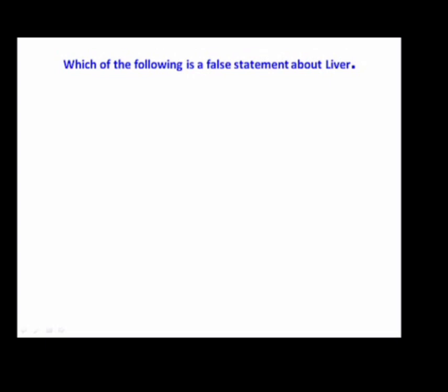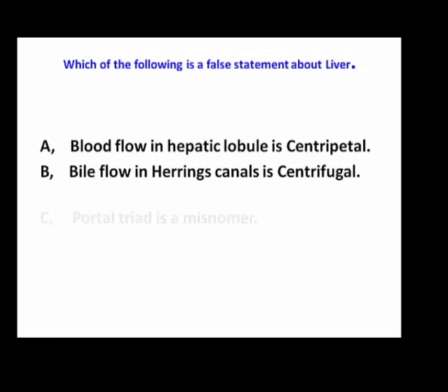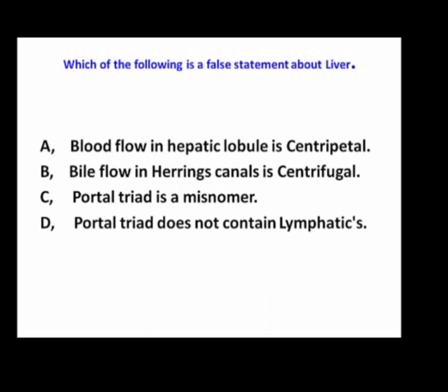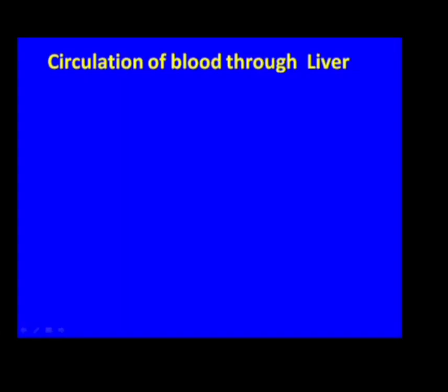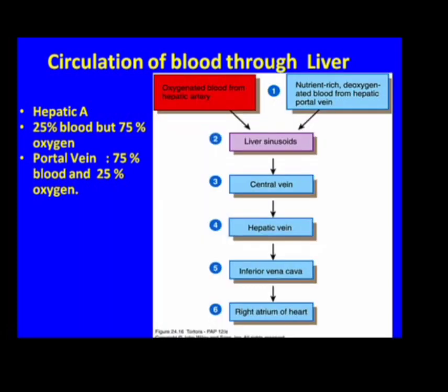Which of the following is a false statement about the liver? Blood flow in the hepatic lobule is centripetal, bile flow in Hering's canal is centrifugal, portal triad is a misnomer, or portal triad does not contain lymphatics. Option D is the wrong option. The liver is supplied by the hepatic artery, which supplies 25% of blood but 75% of the oxygen, and by the portal vein, which supplies 75% of blood but only 25% of the oxygen and is rich in nutrients. Blood flows from the hepatic artery and portal vein to hepatic sinusoids, then to the central vein, which drains into the hepatic veins — right, left, and middle — and then into the inferior vena cava and right atrium.